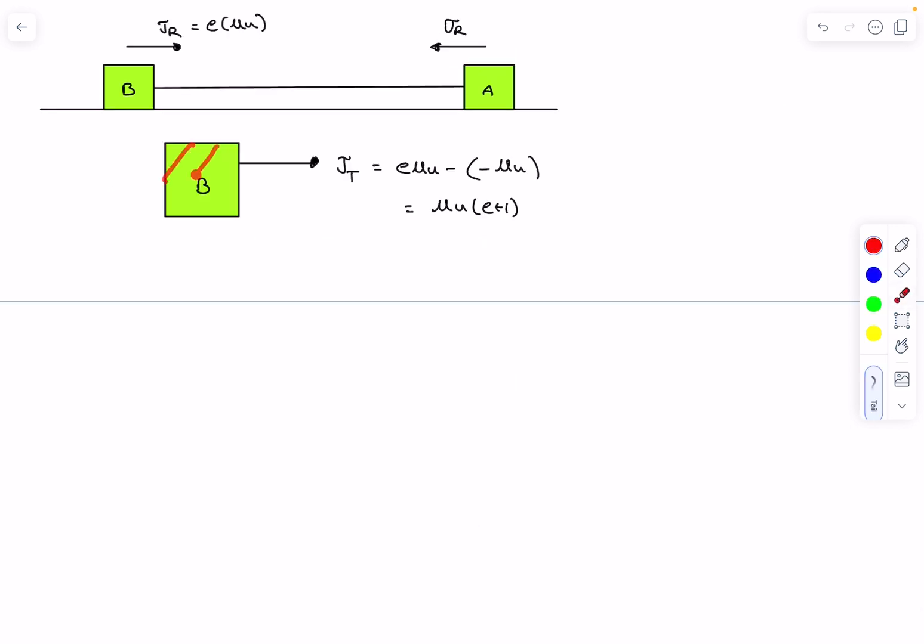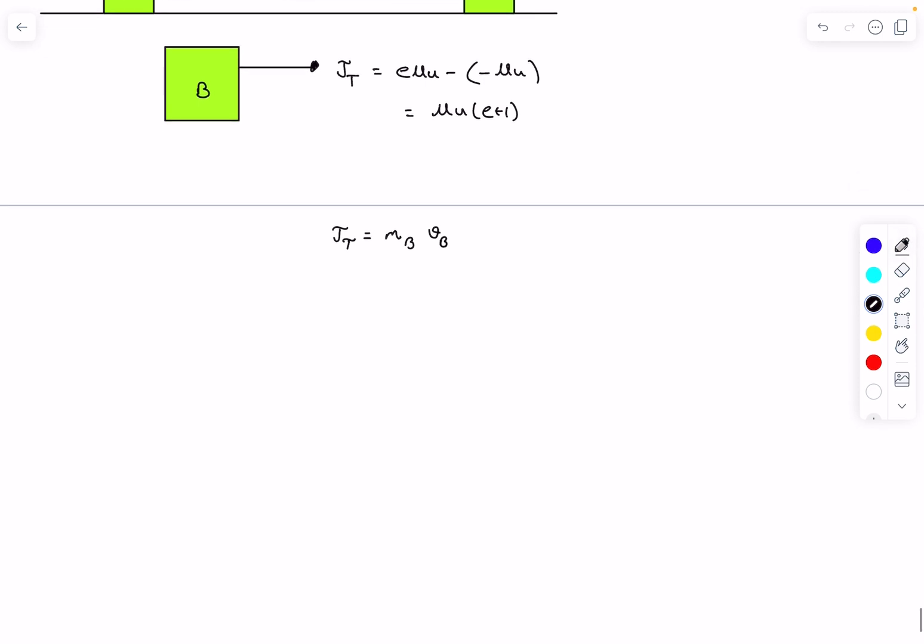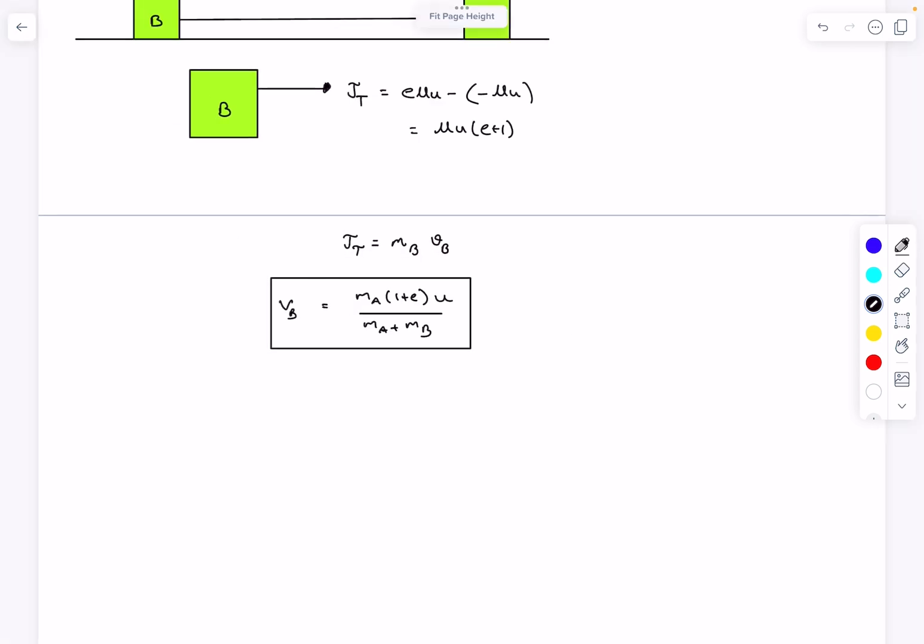Now initially in the ground frame, block b was at rest. So we can actually say that the total impulse on block b is the change in momentum of block b in the ground frame. This is going to be the mass of block b times the final velocity of block b. As initially it was at rest, after solving you get the velocity of b as this particular value.